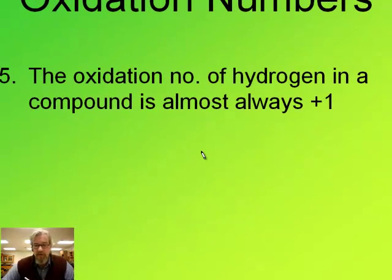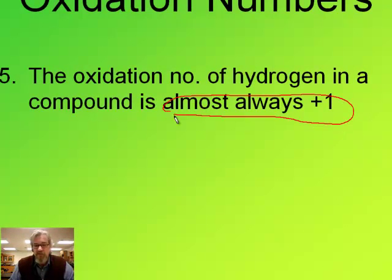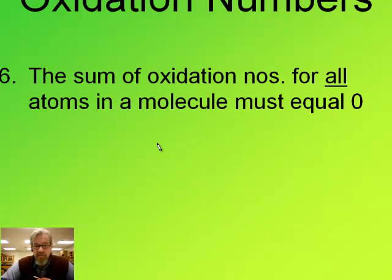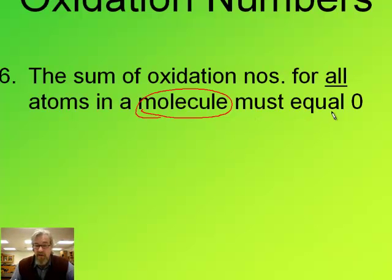The oxidation number of hydrogen in a compound is almost always plus one. There's only one exception — a metal hydride — where hydrogen is in a binary compound with a metal and has a one minus charge. Another very helpful rule: in a molecule, the sum of all the oxidation numbers for all the atoms must add up to zero.